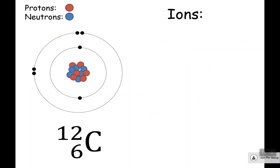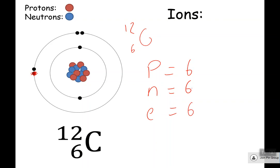Finally, let's look at ions. Here is a carbon atom: atomic number six, atomic mass twelve — so six protons, six neutrons, and six electrons. What would happen if you suddenly got rid of one of these electrons? The number of protons stays the same at six, the neutrons stay the same, but the electrons become five. Now we've got a charge of plus six from the protons and minus five from the electrons — add them up and you get plus one.